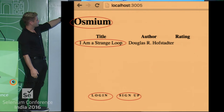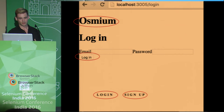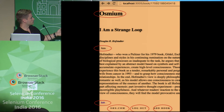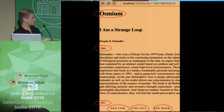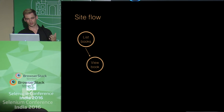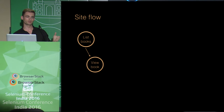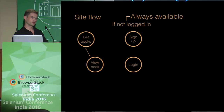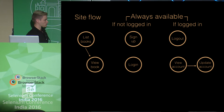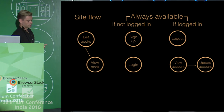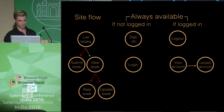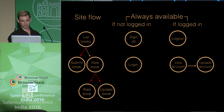Just to show what it looks like — I've circled all the different actions we can do. We can log in, sign up, view a book, and list the books. A site flow might be: we can go from the listing books page to viewing a book. If we're not logged in, from any page we should be able to sign up or log in. If we are logged in, we should always be able to log out, view our account, update our account. If we are logged in, we should be able to submit a book, rate a book, update a book. So pretty simple still — just a very simple state flow diagram.